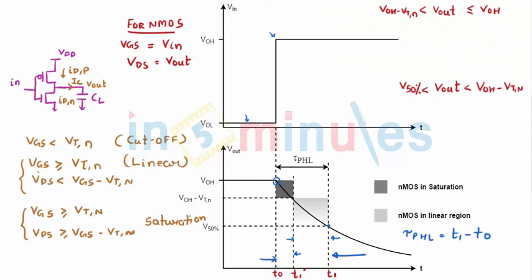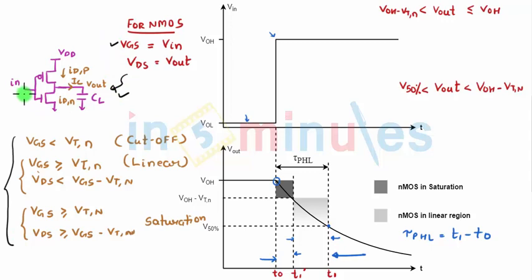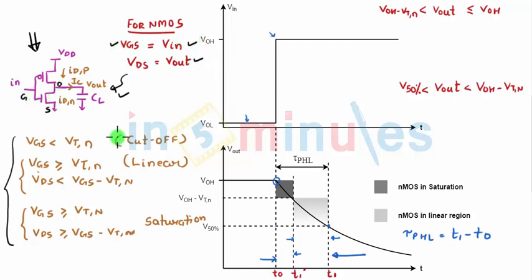Here is the NMOS transistor with its regions of operation: cutoff, linear, and saturation. From the CMOS inverter circuit, VGS for the NMOS equals VIN and VDS for the NMOS equals VOUT. These will be used to determine the region of operation at each point in time.